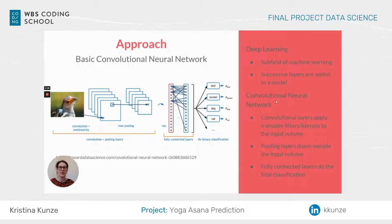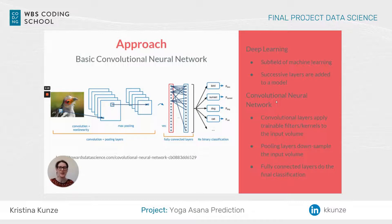My model was a convolutional neural network. Those layers apply trainable filters to the input volume and recognize especially edges in the image, and are trained to predict the classes. Max pooling layers are used to downsample the input volume. And at the end, fully connected layers are used for the final classification.